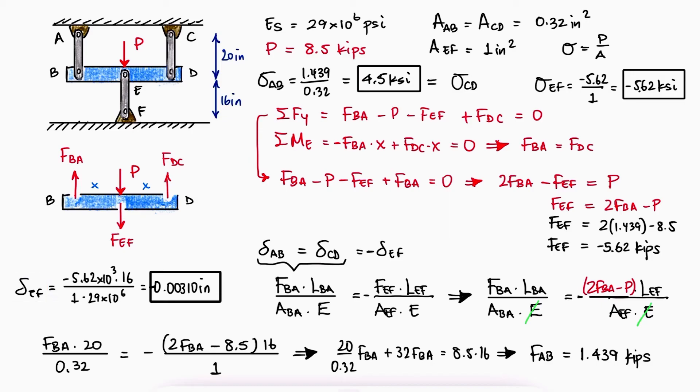Delta EF, which means the displacement of E with respect to F, is also negative since EF is being compressed and F is the floor.